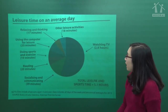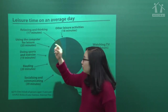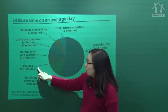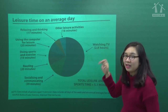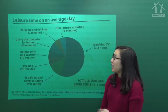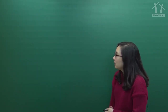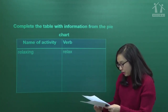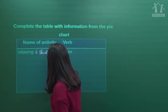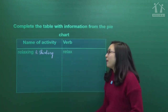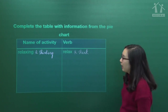Chúng ta quay lại pie chart. Các hoạt động: 1) relaxing and thinking, 2) using the computer, 3) doing sport and exercise, 4) reading, 5) socializing and communicating, 6) watching TV. Vậy các bạn cố gắng nhớ 6 hoạt động và list lại. First: relaxing and thinking - thư giãn và suy nghĩ - động từ là 'relax' và 'think'.